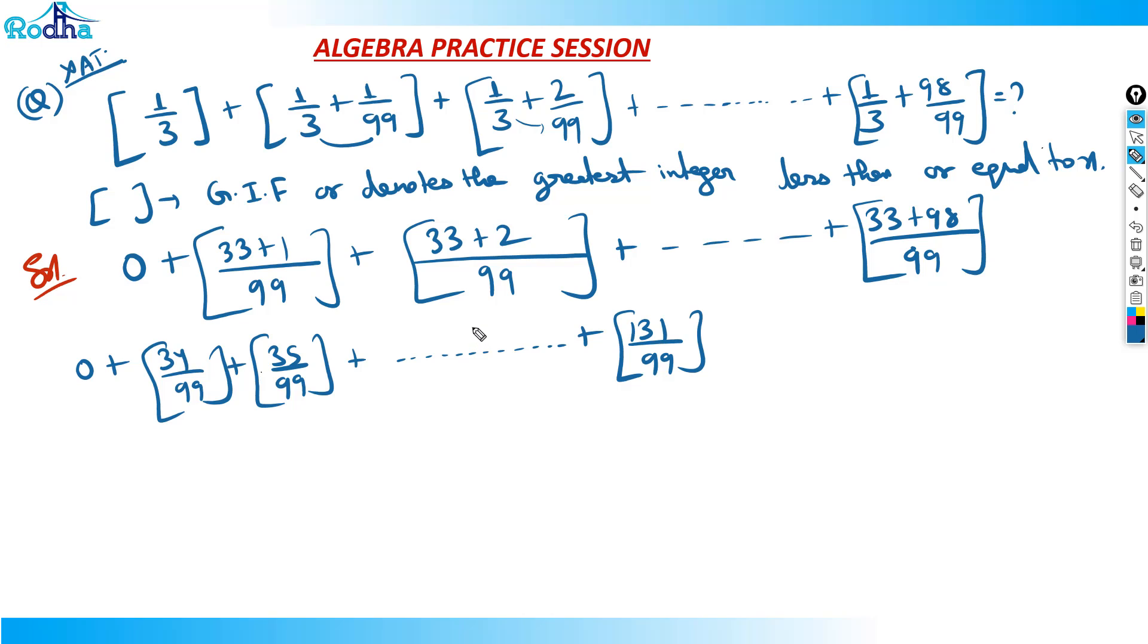From here the value 1 will start. 99 by 99 is 1, right? Again after this, 100 by 99 again 1. This 1, 1, 1 will appear how many times?